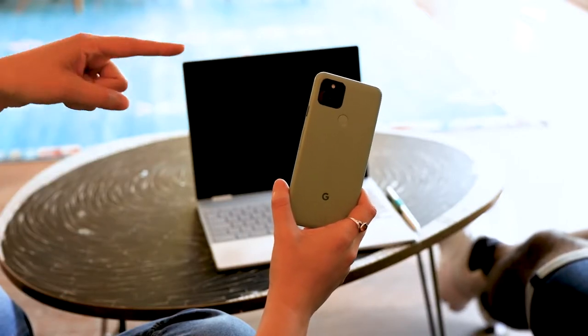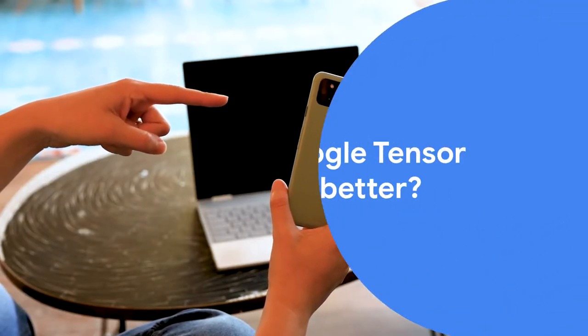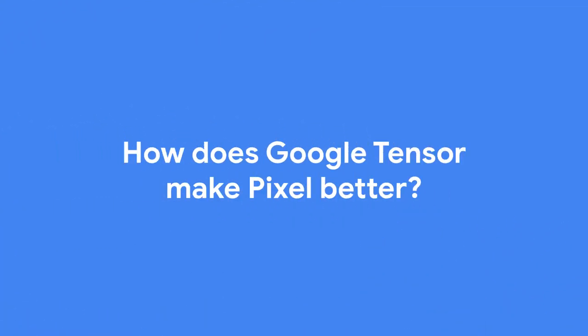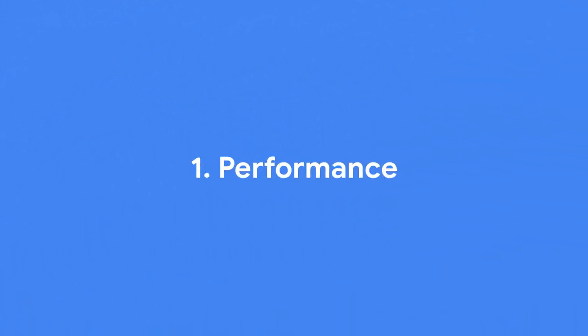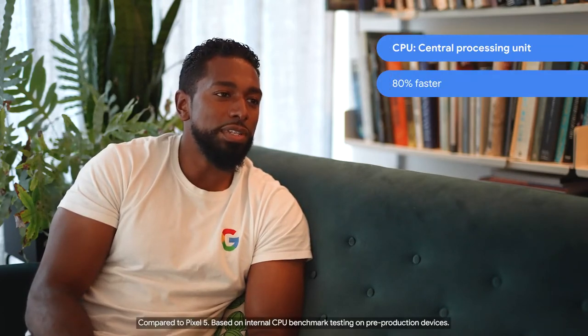How does Google Tensor make the Pixel 6 series even better than previous Pixel phones? First up, we have performance. Thanks to Google Tensor, Pixel 6 and Pixel 6 Pro's CPU performance are up to 80% faster than Pixel 5. As a result, Pixel runs smoother, launches apps faster and loads pages quicker.